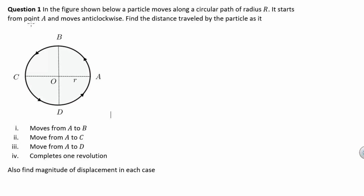Hello and welcome to PhysicsCatalyst.com. Our question states that in the figure shown below, a particle moves along a circular path of radius r. It starts from point A and moves anti-clockwise. Find the distance travelled by the particle as it moves from A to B, from A to C, from A to D, and when it completes one rotation. The question also asks to find the magnitude of displacement in each case.